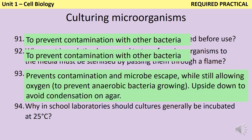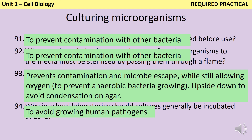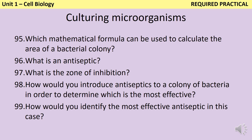In school labs, we tend to culture things at about 25°C and use this cooler temperature to prevent culturing pathogens. All the things that will make you ill are happiest at body temperature of about 37°C, so by using a cooler temperature we're less likely to culture those pathogens. Provided you set up your culture properly, all colonies should be roughly circular, so to calculate the area of a colony you can use the formula for the area of a circle: pi r squared. An antiseptic is a chemical that will kill bacteria or other microorganisms.